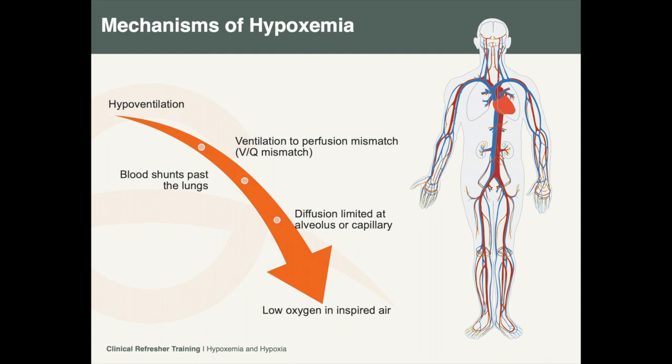There are several mechanisms leading to hypoxemia. Hypoventilation from inadequate breathing will fail to bring oxygen into the lungs. Clinical examples include over-sedation or central nervous system injury, such as a stroke or traumatic brain injury.